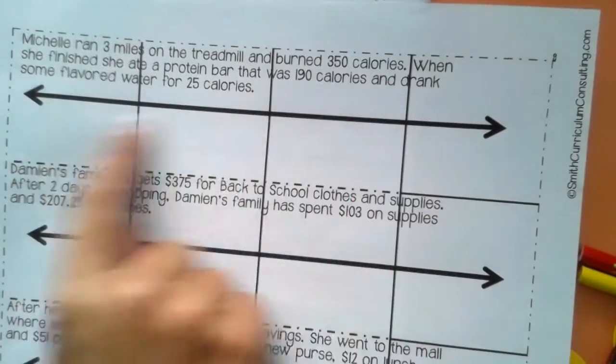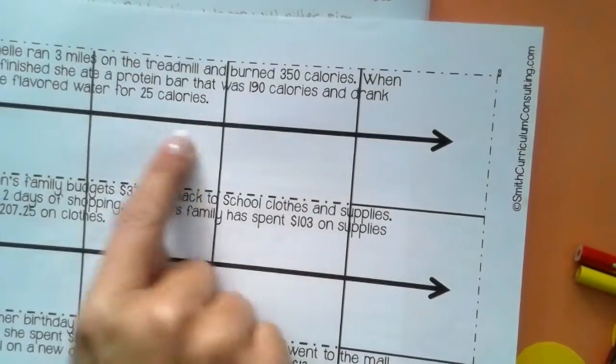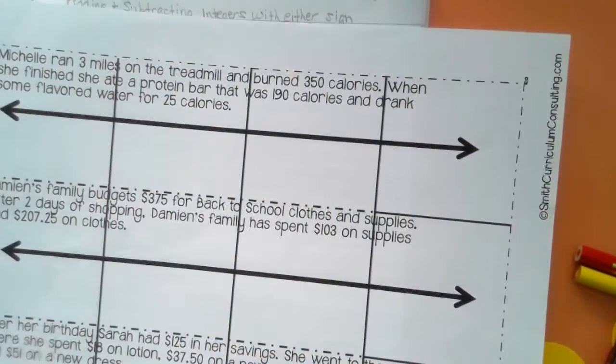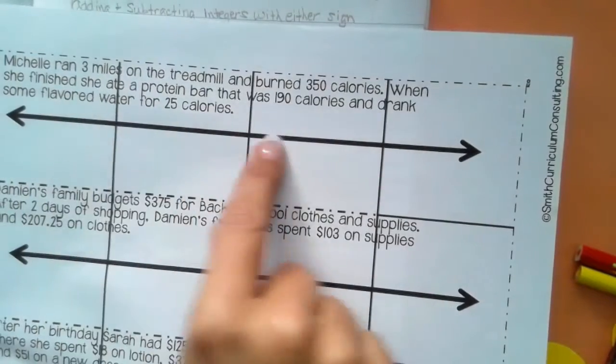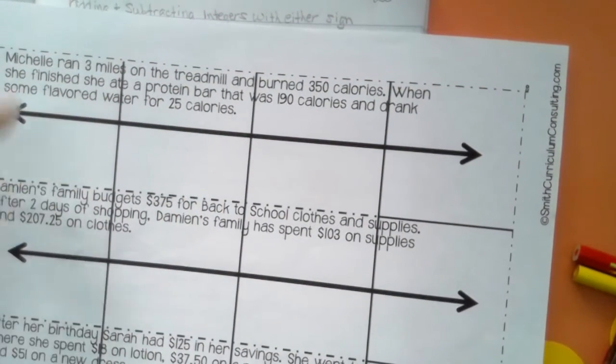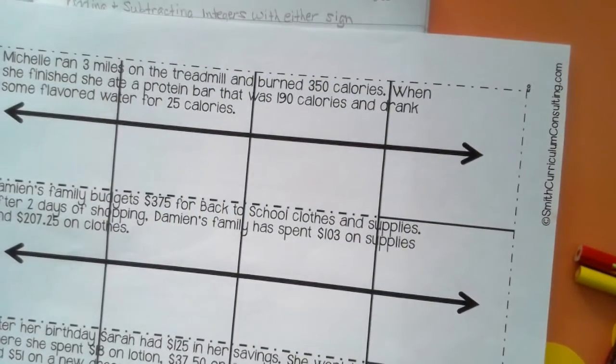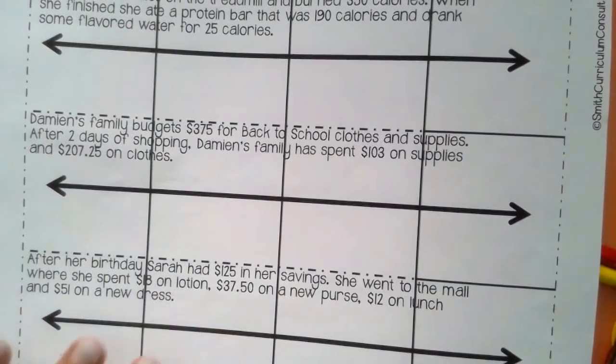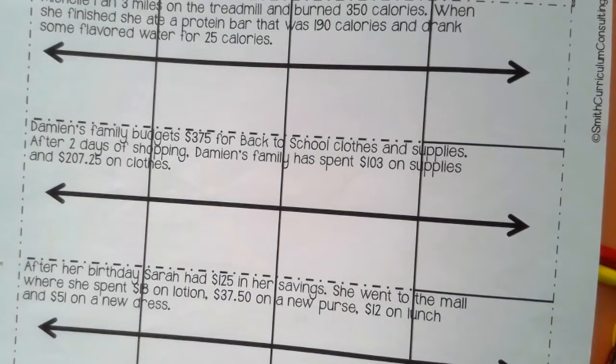So for this sheet, you are going to create a number line showing the up and down of what the numbers are. So you are going to show what you know and complete the problem while showing your work on the number line.